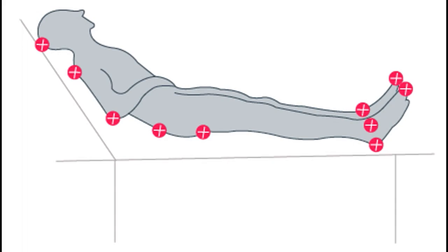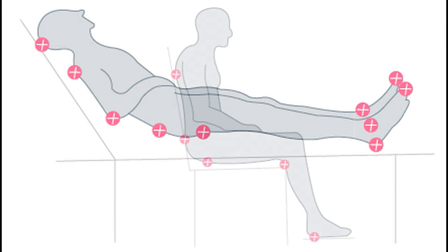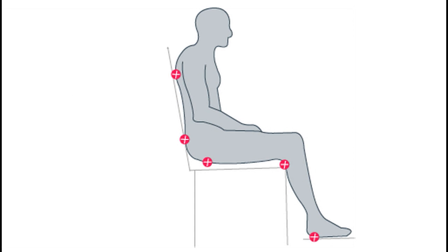This diagram shows the most common places that pressure injuries can occur. As you can see, skin over bony areas such as the back of the head, shoulders, elbows, buttocks, heels and toes are particularly vulnerable. Please note that any area that experiences unrelieved pressure or shearing is at risk.